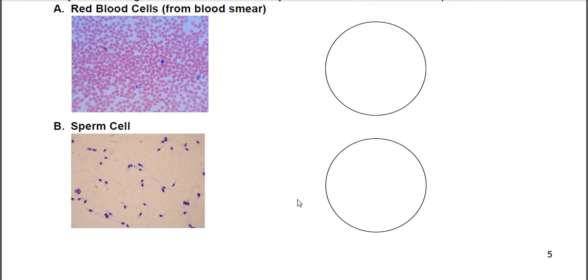Next are sperm cells. What you're looking at here is the purple dots are the main body of a cell, and then you see a long flagella coming off. The function of the sperm cell is to fertilize an egg of the reproductive system. The special features are the flagella. These are the only cells in a human that are able to swim.